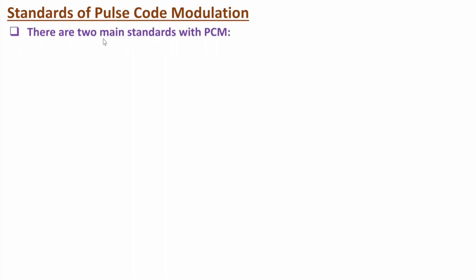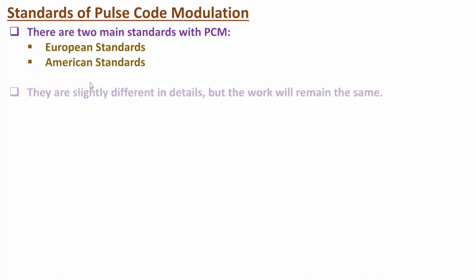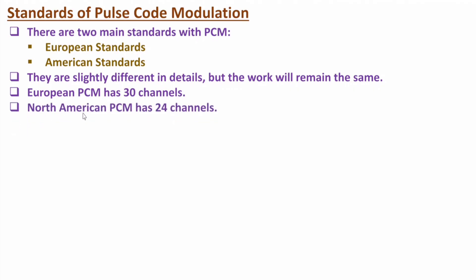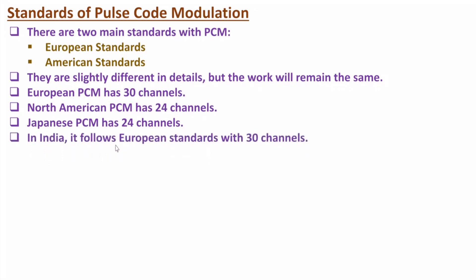There are two main PCM standards: European and North American. Working-wise both are the same, but they differ in technical details. The European PCM standard has 30 channels, the North American PCM standard has 24 channels, and the Japanese PCM standard also has 24 channels. India follows the European standard with 30 channels.